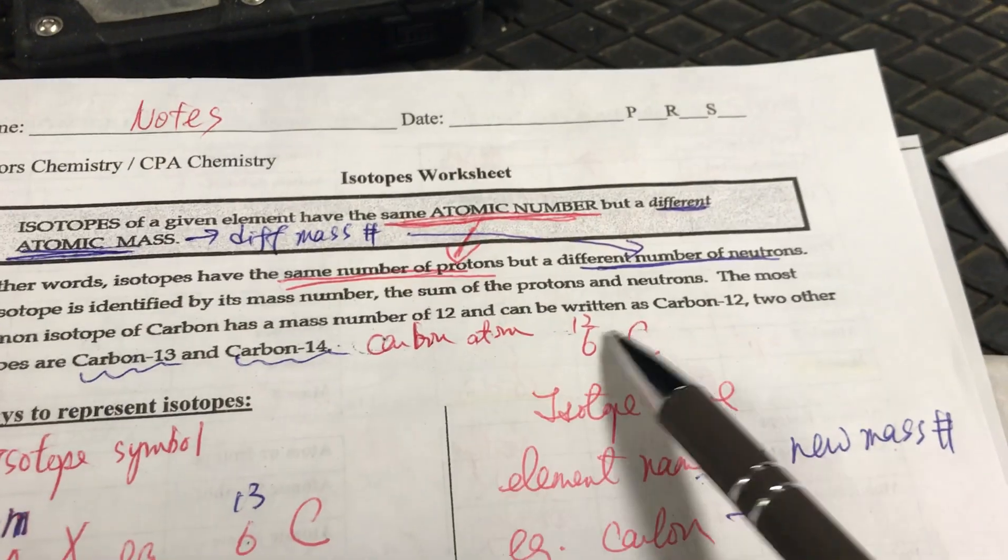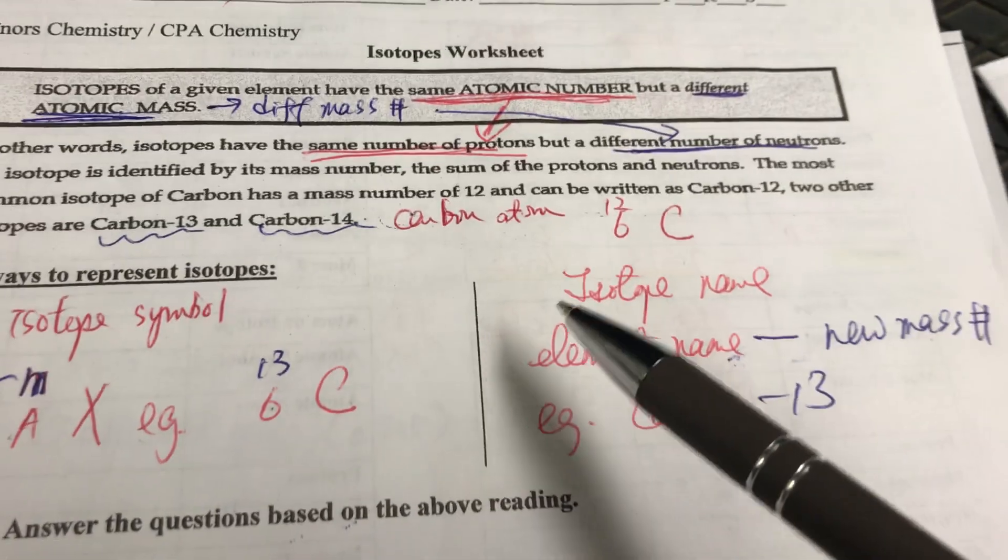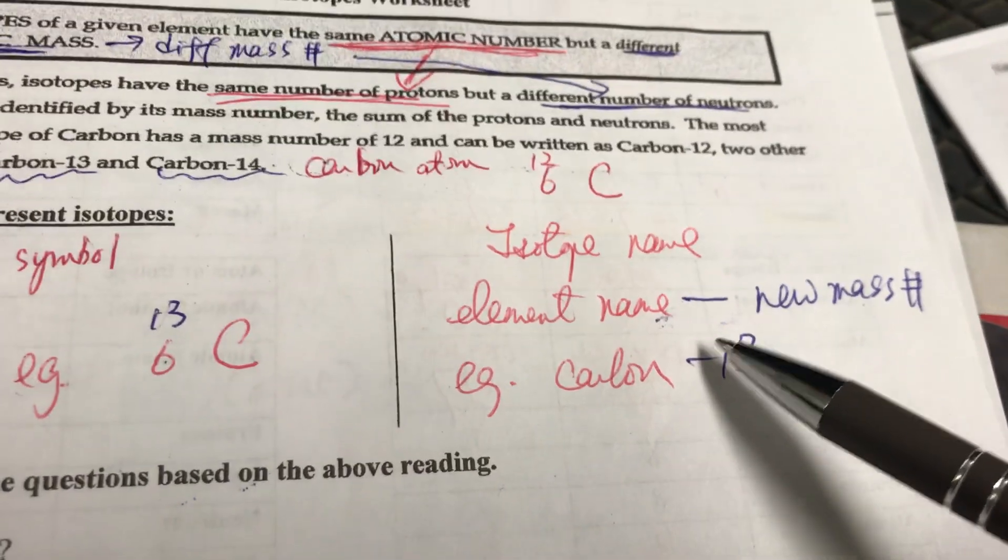But when we name it carbon, we will say carbon thirteen. So there could be many different kinds of isotopes, right? The neutrons can be more, can be less than the proton, okay?